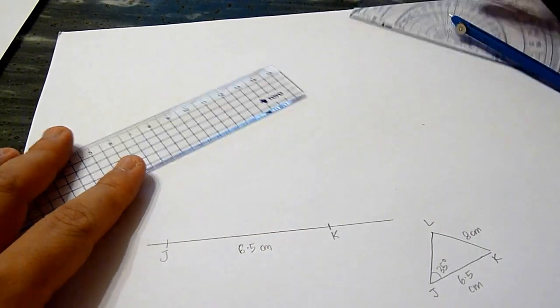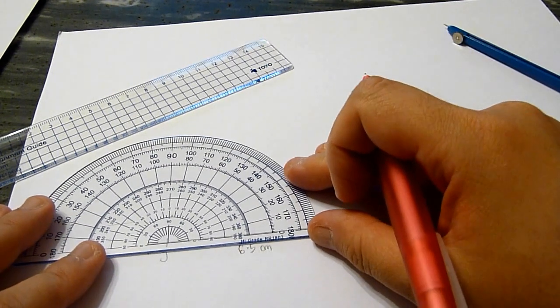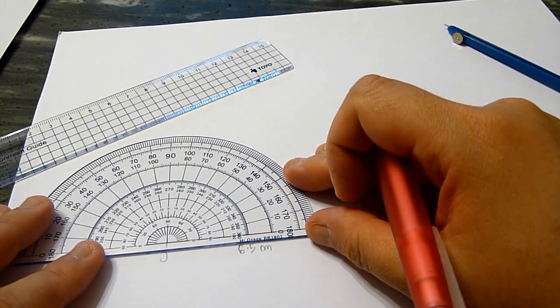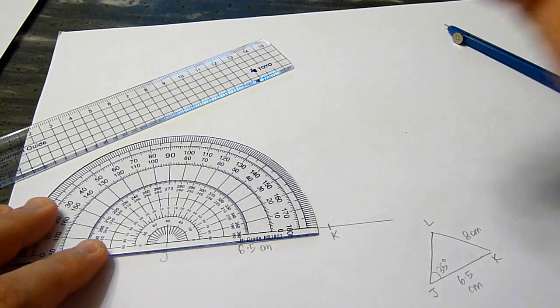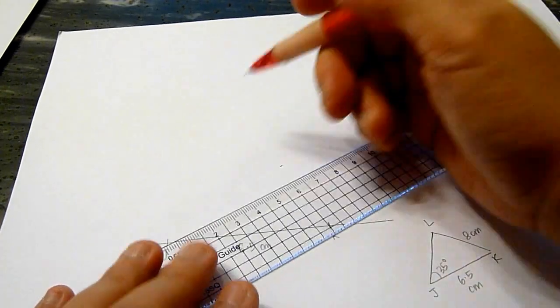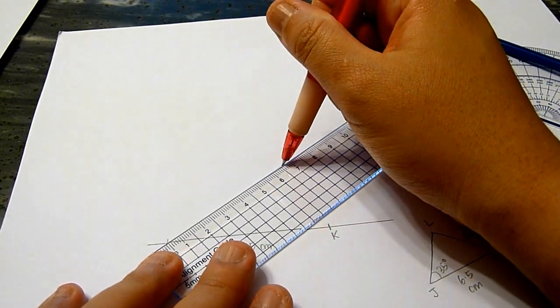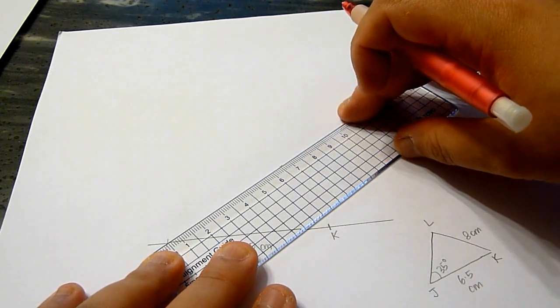And now, measure the angle LJK such that it is 35 degrees. Join the points to form the angle.